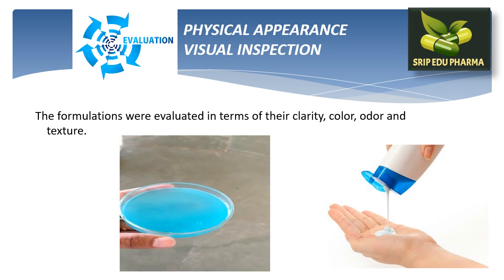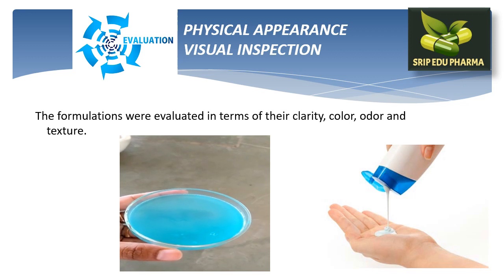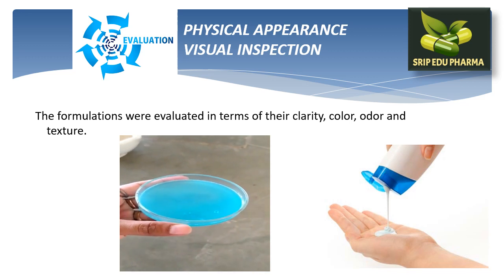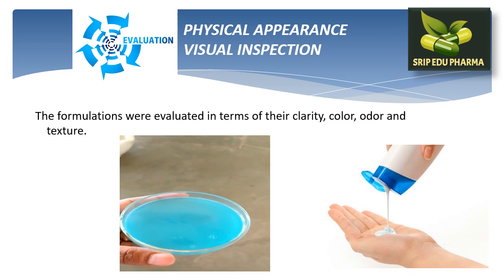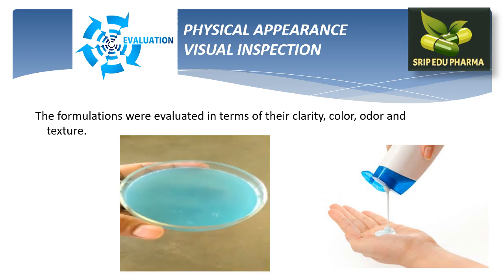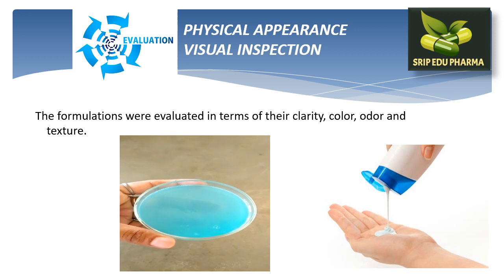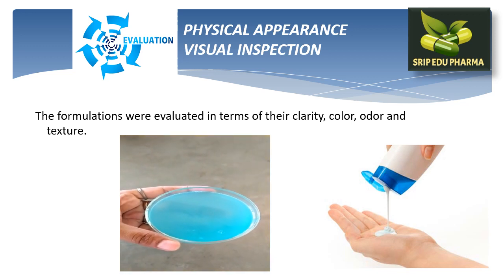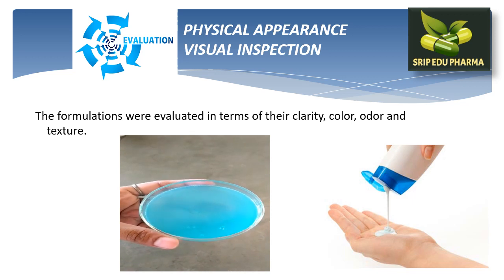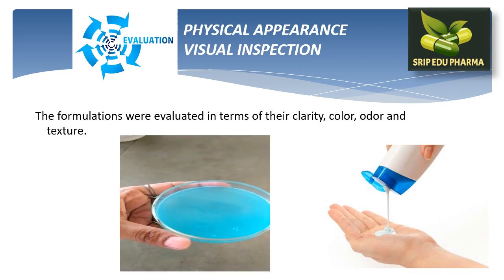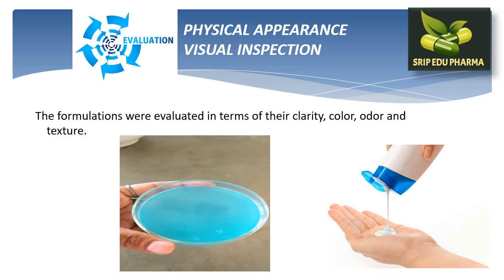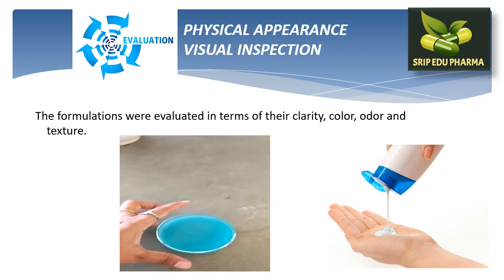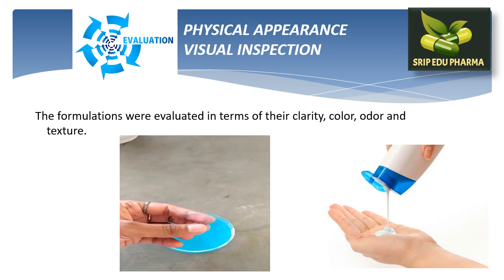Our first parameter is physical appearance, which we perform by visual inspection. First, color — we can see that the color of the sample shampoo is Turkish blue. Second, odor — it has a good fragrance. Third, clarity — there are no gritty particles present. Next, texture — it feels like a smooth, viscous preparation.